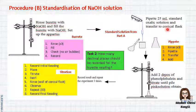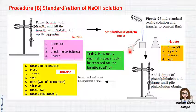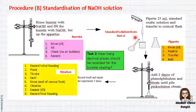Next, for the pipette part — again, you have to rinse three times: first with tap water, then distilled water, and the last one is oxalic acid. Before you start to pipette the solution, make sure you transfer the oxalic acid solution into the beaker. You cannot directly pipette the oxalic acid solution from the volumetric flask. You must transfer from the volumetric flask into the beaker first. Then only you start to pipette 25 ml of oxalic acid and transfer into the conical flask.